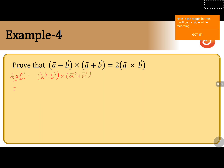That is equal to: first we take the first bracket a⃗ in cross with the second bracket terms, that is a⃗ + b⃗. Then in the first bracket after a⃗, we have one more vector, that is minus b⃗ cross (a⃗ + b⃗). When you take the cross product, you get a⃗ × a⃗ plus a⃗ × b⃗. When we multiply with minus b⃗, we get minus (b⃗ × a⃗), and then minus (b⃗ × b⃗).